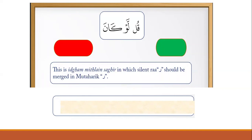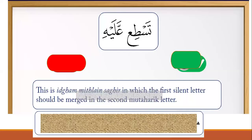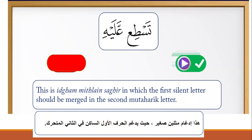قل لو — this is idgham mithlain saghir in which the silent lam should be merged into the mutaharrik lam. Please repeat after me: قل لو كان. That is correct. The wrong pronunciation is قل لو كان with separation. Similarly: تقطع عليه — the first silent letter should be merged into the second mutaharrik letter. The wrong version is تقطع عليه with izhhar.